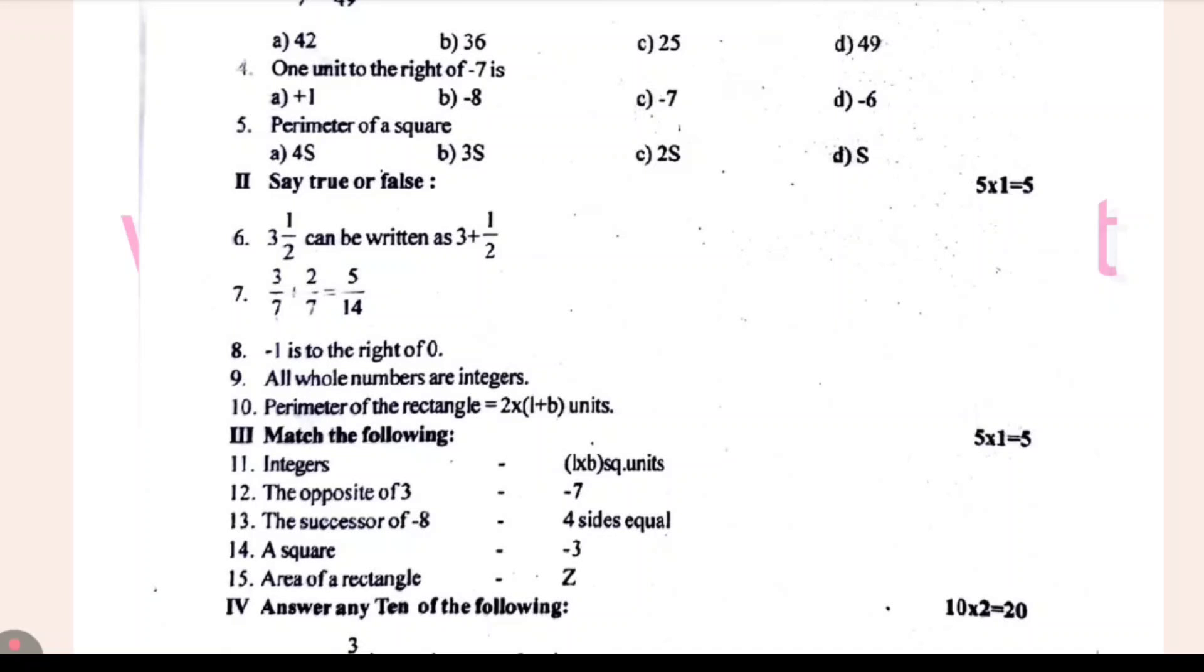All whole numbers are integers. Perimeter of a rectangle is equal to 2 times L by b units. Length by plus breadth units. Let's match it.